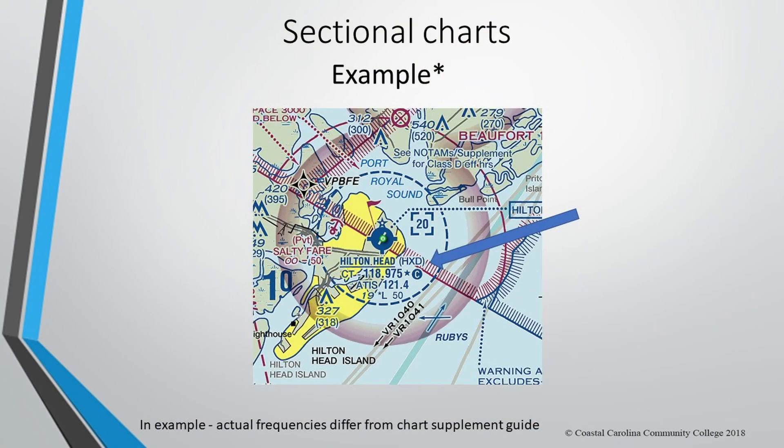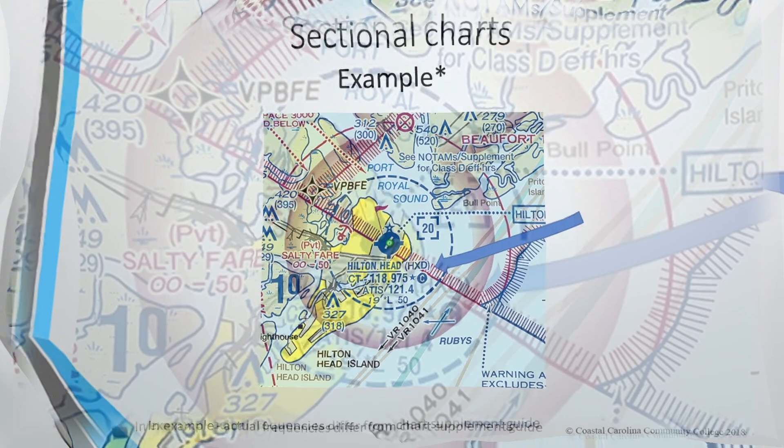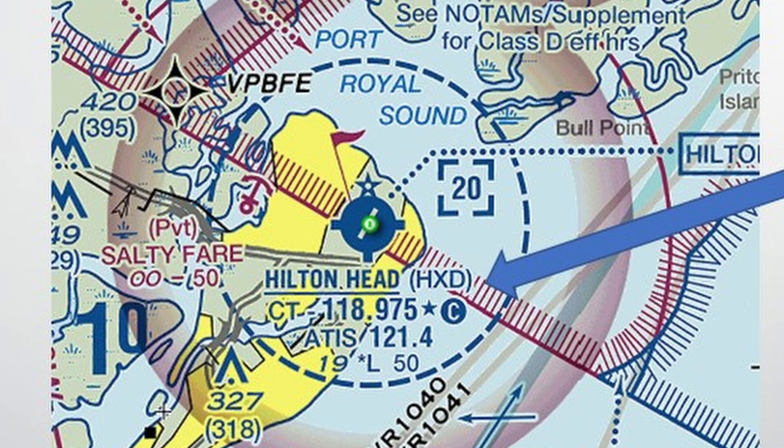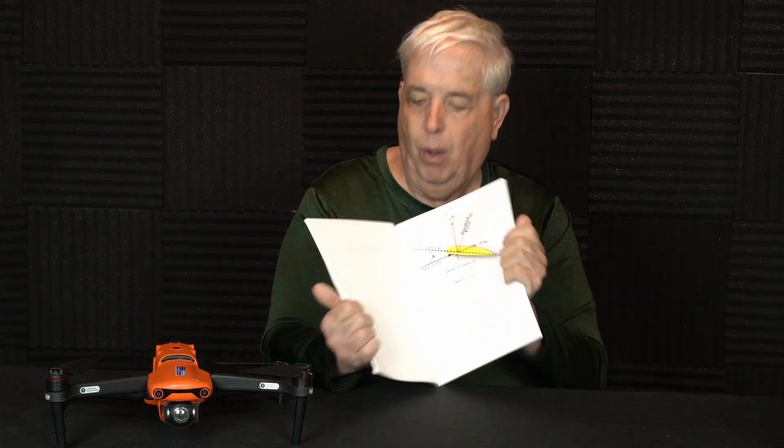The more you know what's in this book, the more you're going to be successful because it is available to you in the test room. We're going to look at this example and look at Hilton Head Airport. Below it you see a series of numbers and symbols. You may be asked what is the control tower frequency, what does the star mean, what is the frequency for ATIS. You really don't have to memorize this because you're going to have that book, so you can look at these sectional chart frequencies.